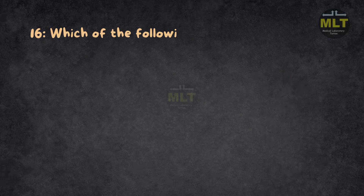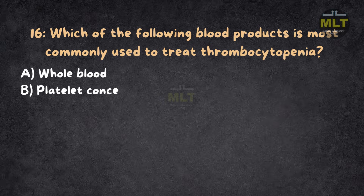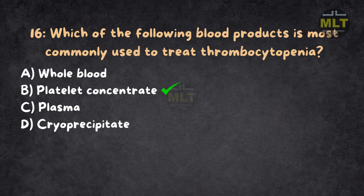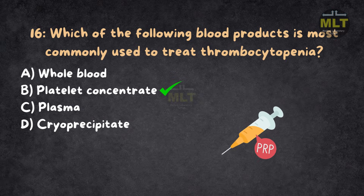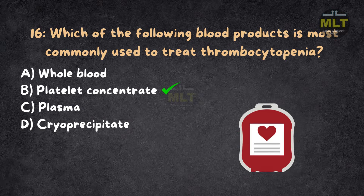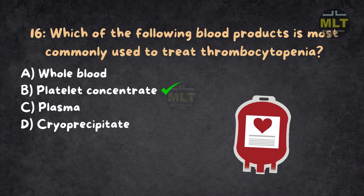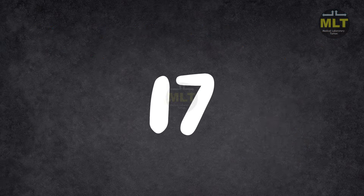Question 16: Which of the following blood products is most commonly used to treat thrombocytopenia? Option A: Whole blood. Option B: Platelet concentrate. Option C: Plasma. Option D: Cryoprecipitate. Correct answer: B, platelet concentrate. Platelet concentrate is used to treat thrombocytopenia — low platelet count — and to manage bleeding disorders related to platelet deficiencies. Whole blood contains all components, but platelet concentrate is more specific. Plasma helps in clotting disorders, not platelet deficiencies.